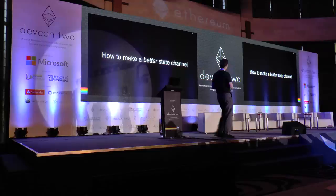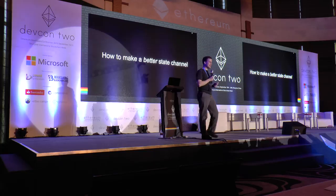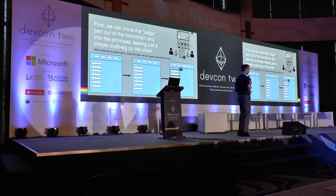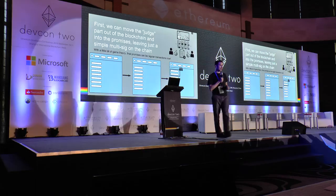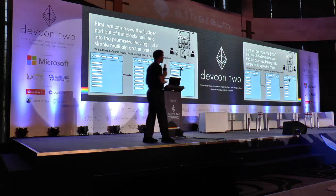Let's make it a little bit better. First thing — I lied — you don't put a judge in the blockchain. You can put the judge in the promises, and then you just have a multisig in the blockchain. This is much better: it's tighter, more compact, and gives you better privacy properties. If someone's looking at the blockchain, they just see a multisig that occasionally makes transactions — nothing suspicious about that.